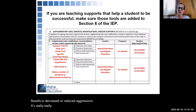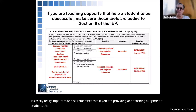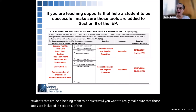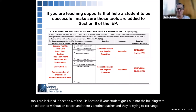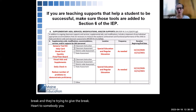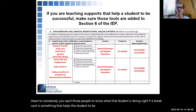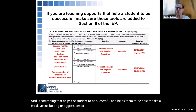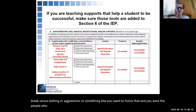It's really important to remember that if you are providing and teaching supports to students that are helping them be successful, you want to make sure that those tools are included in Section 6 of the IEP. If a break card is something that helps the student be successful — helping them take a break versus bolting or aggressions — you want to honor that, and you want the people around the student to know why it's important to honor it as well. Documenting it on the IEP is the way to do that.